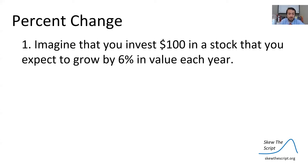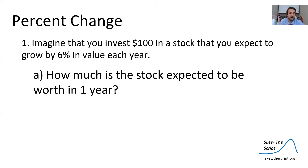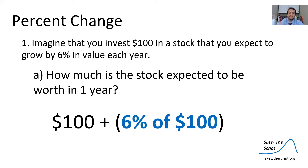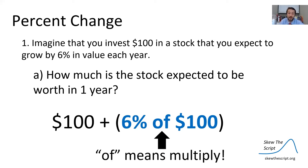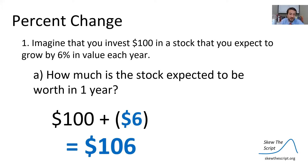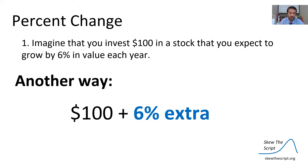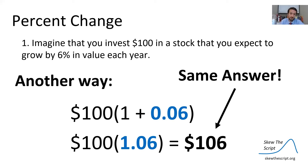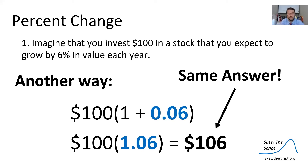Let's think about this in the context of percent change. Imagine that you invest $100 in a stock that you expect to grow by 6% in value each year. How much is that stock expected to be worth in one year's time? We start with $100 and earn 6% extra. That's 6% of $100, and "of" means multiply, so we get 0.06 times 100 equals $6. Our stock is now worth $106 after one year. Another way to calculate this: multiply $100 by 1 plus 0.06, which is 100 times 1.06, giving us the same answer of $106.